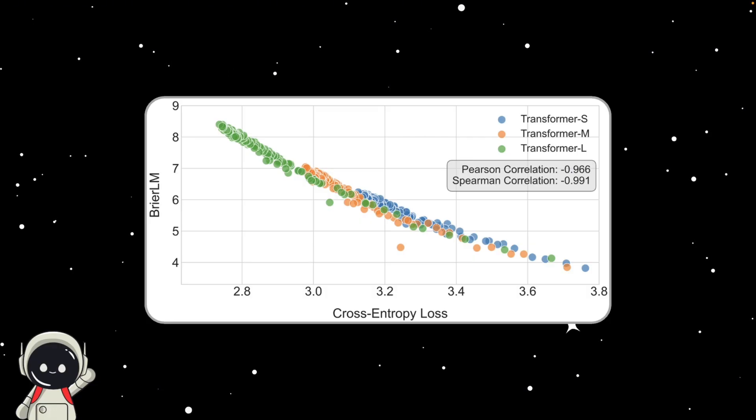So, the team invented a new score called Breer LM, based on something called the Breer score from statistics. In plain English, it measures how close the model's outputs are to what humans would actually write, without needing probabilities. This new metric works not just for CALM, but also for comparing all kinds of models on equal ground. It's like a universal test for how confident and accurate an AI really is.